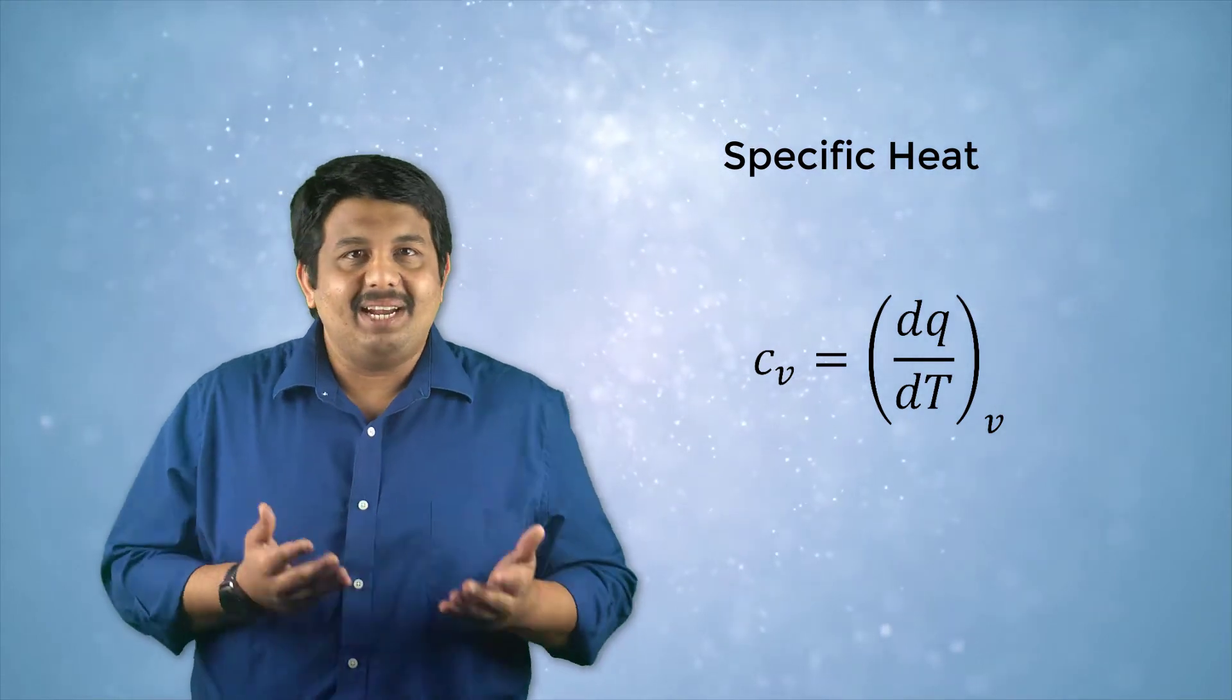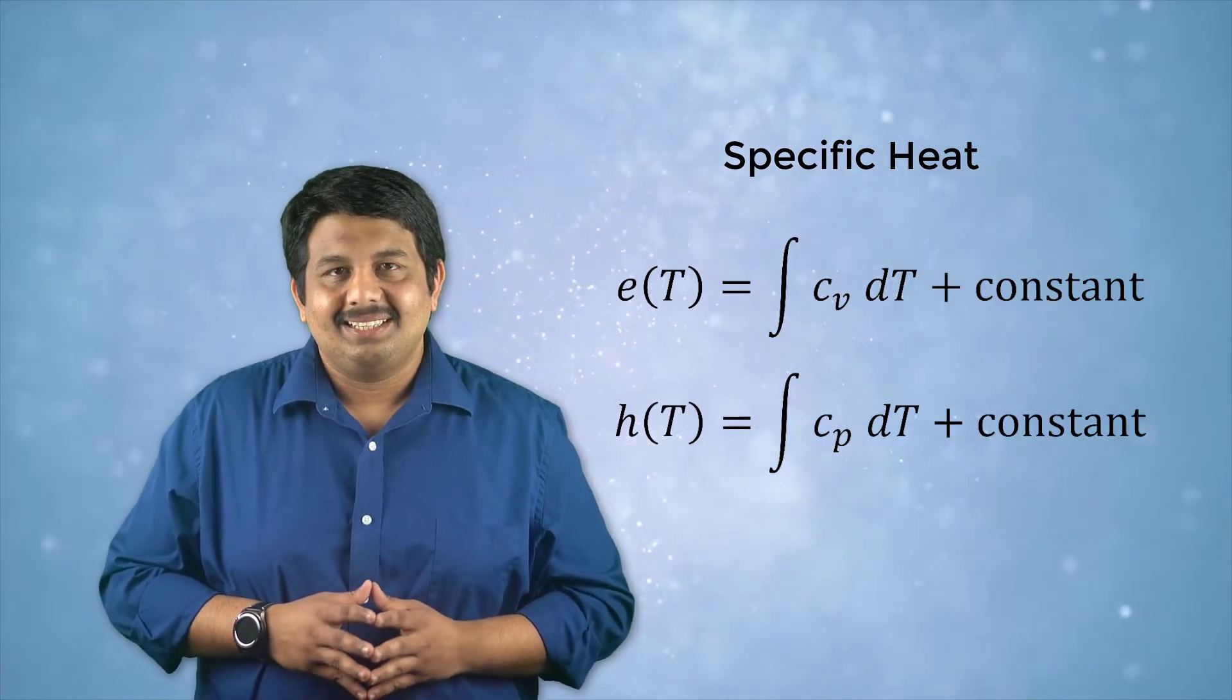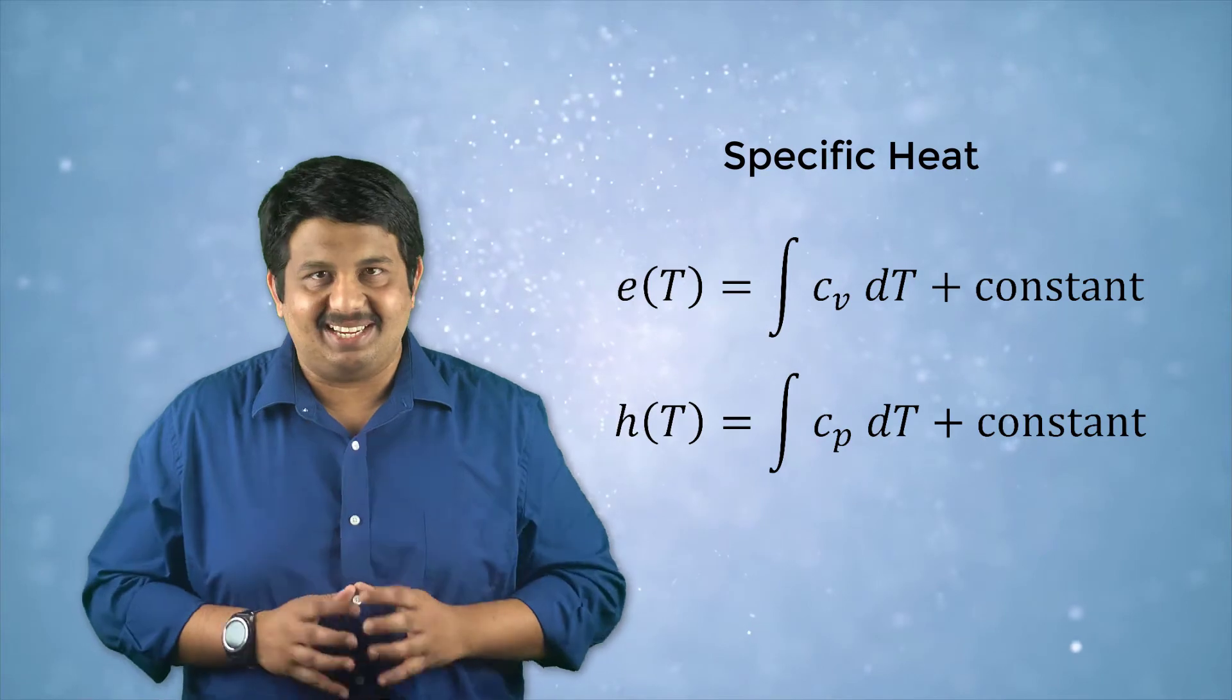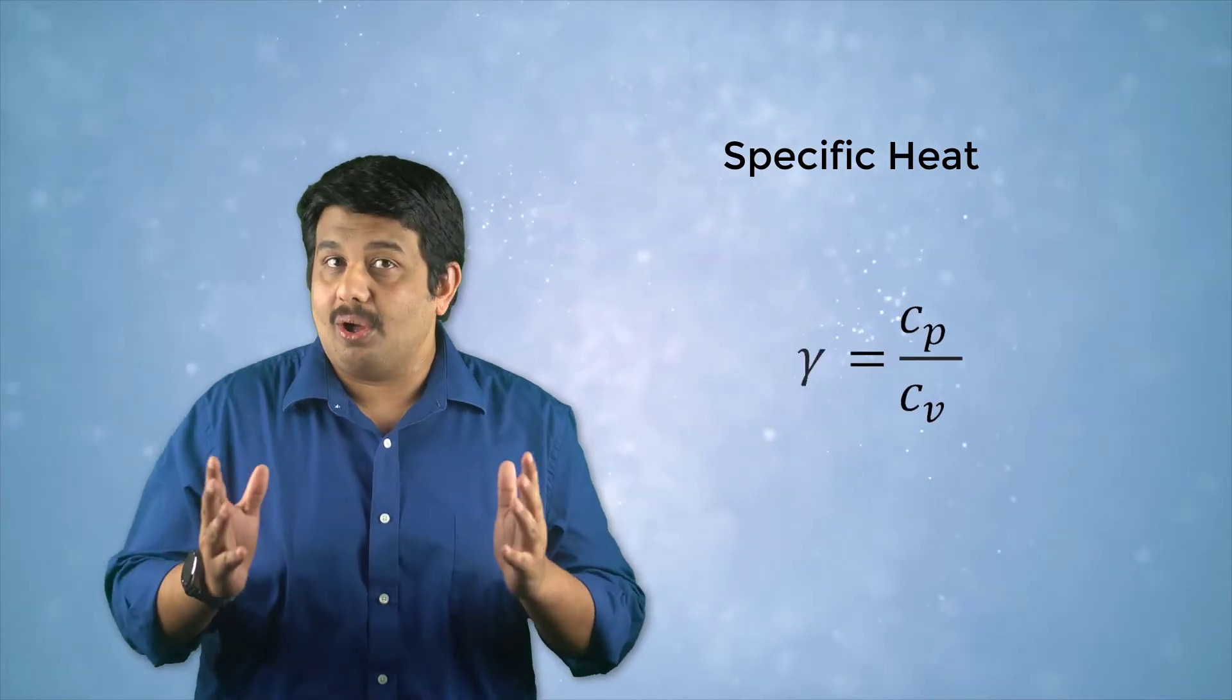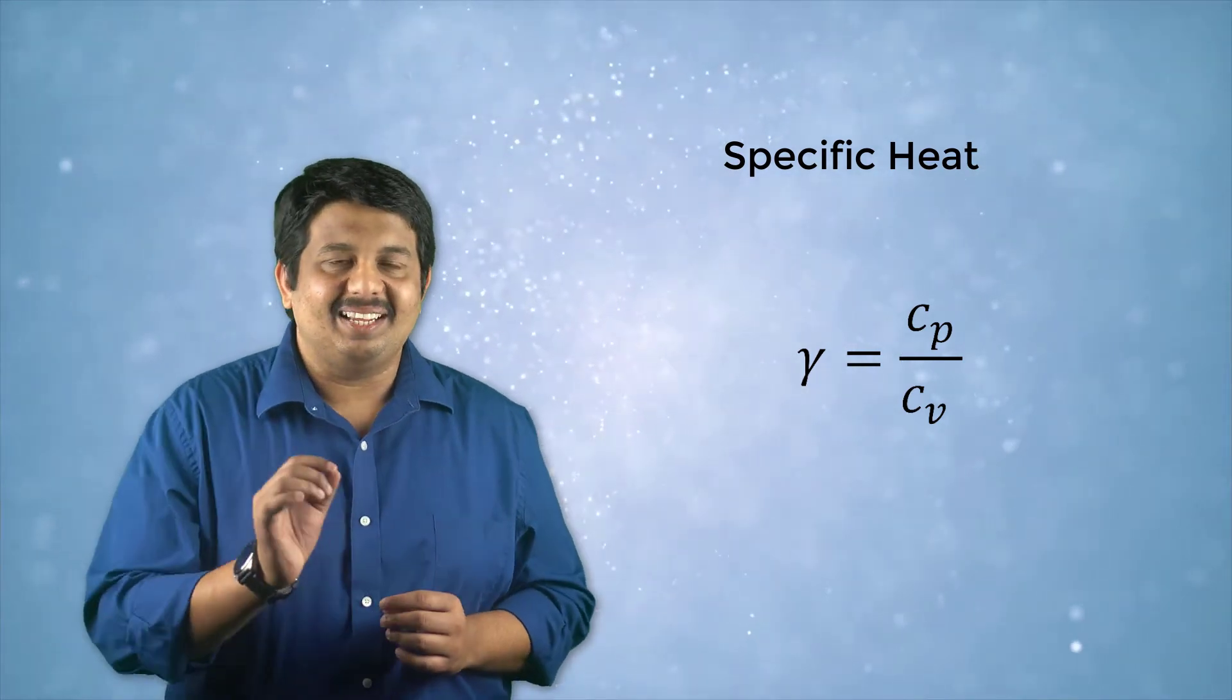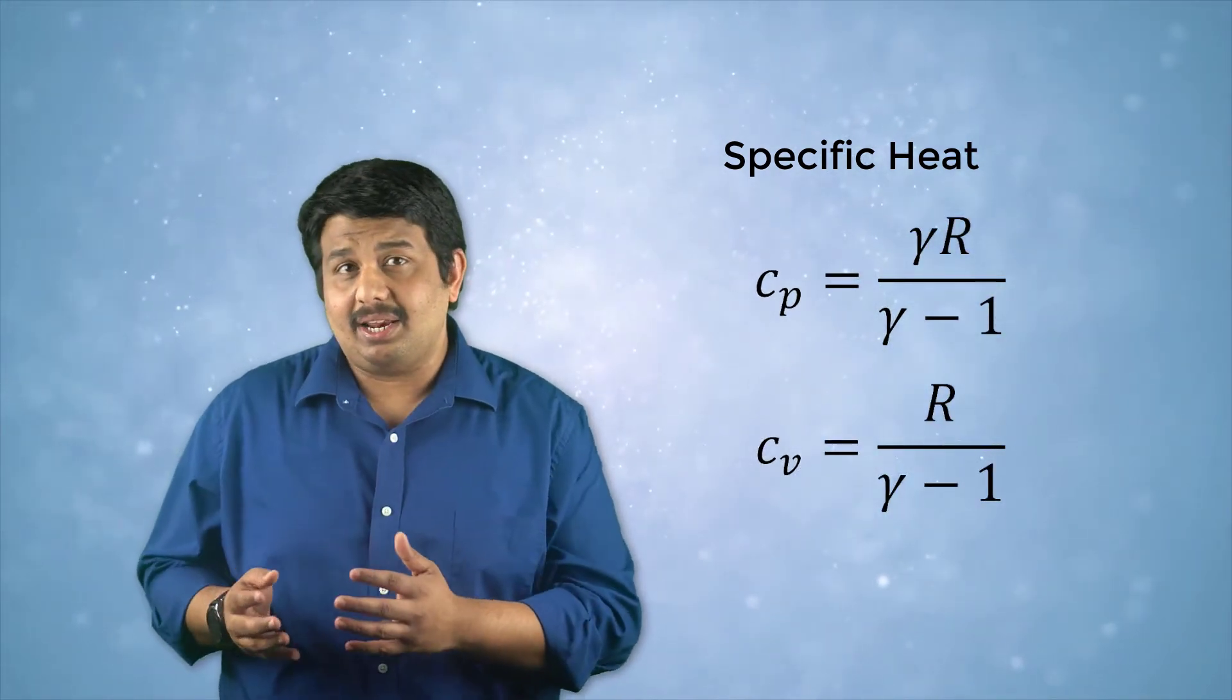For an ideal gas, these can be defined using the internal energy and the enthalpy of the system as shown here. A gas in which both Cp and Cv can be assumed to be constant is a calorically perfect gas. For a given gas, Cp and Cv are related to the gas constant R using this relation. Moreover, we can also define an additional variable called the heat capacity ratio or the ratio of specific heats by taking the ratio of Cp and Cv as shown here. This variable is commonly denoted by the Greek letter gamma. We can now express Cp and Cv using gamma and R using the following relations.